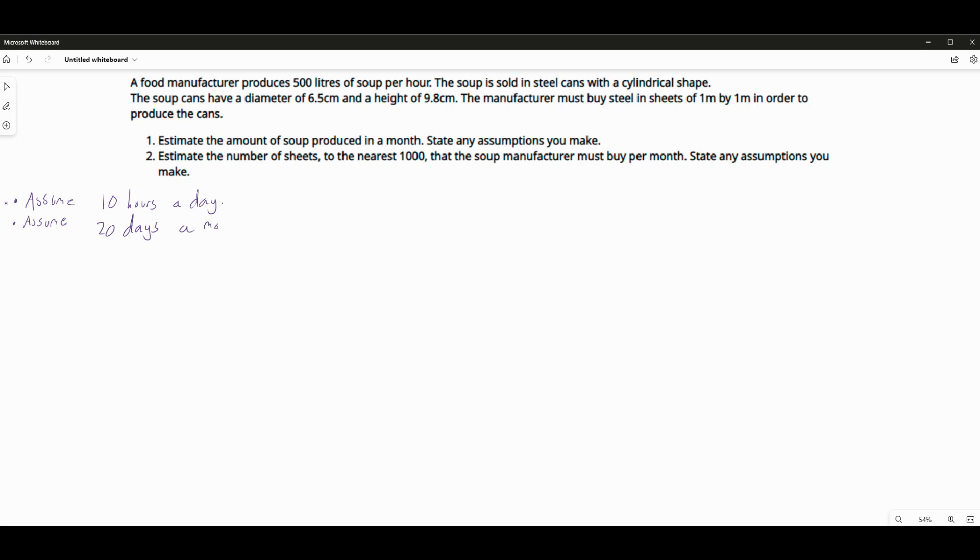The trick with this is to not be too obsessed with getting the right answer. We simply don't know enough about this place to know for certain how often it's open, how many hours a month it's open. We just need to make some assumptions. This is the point of Fermi questions. We're making snappy estimates to work out, work something out.